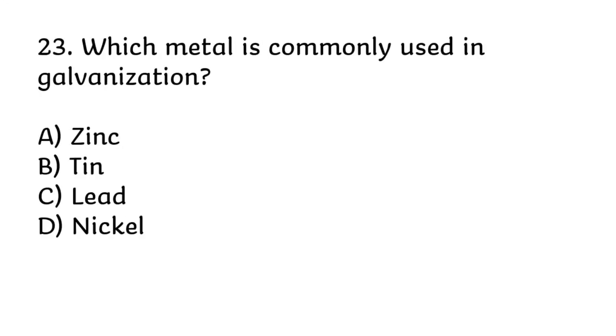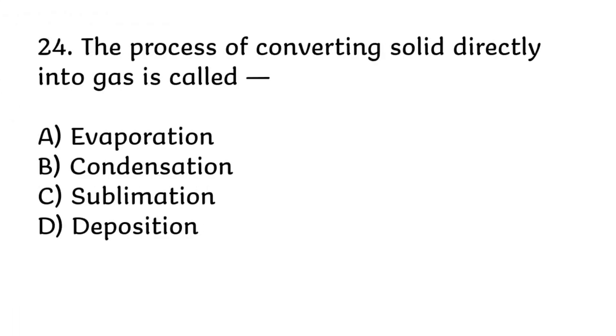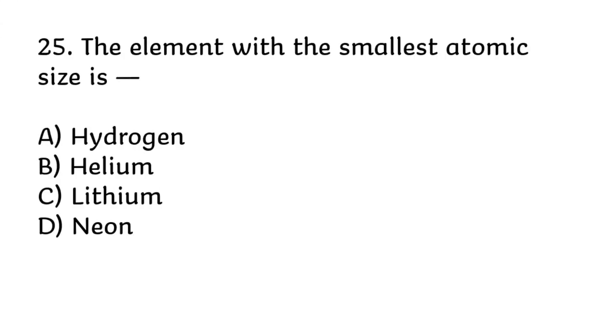Which metal is commonly used in galvanisation? Correct answer is A, zinc. The process of converting solid directly into gas is called? Correct answer is C, sublimation. The element with the smallest atomic size is? Correct answer is B, helium.